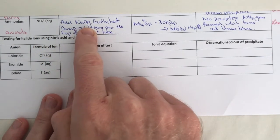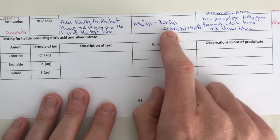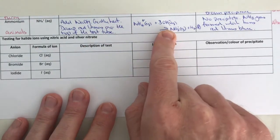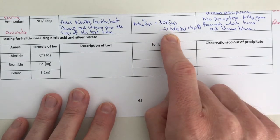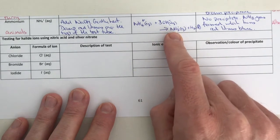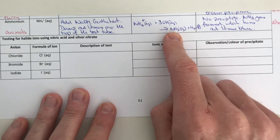This causes ammonia gas to be produced. Now ammonia is a base, and therefore we can use litmus paper to identify the presence of that base because this will turn damp red litmus paper.